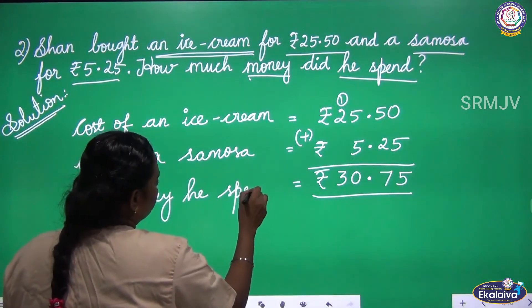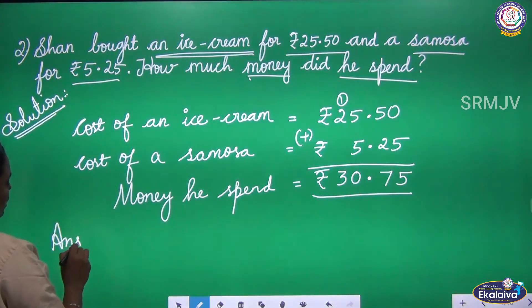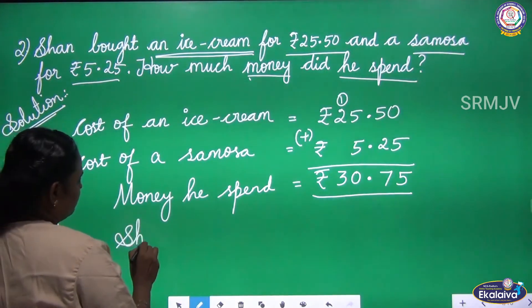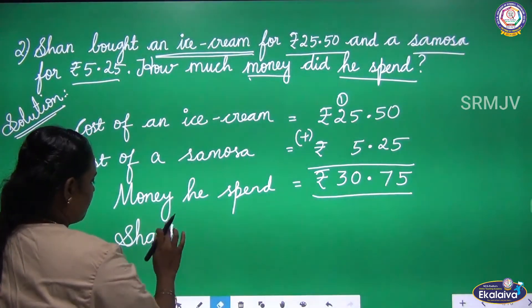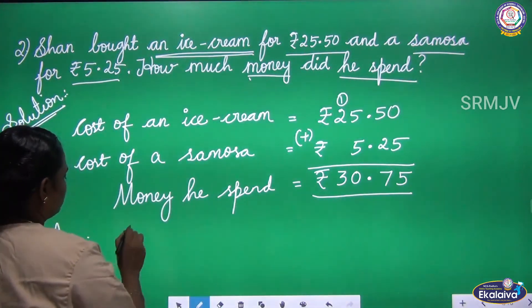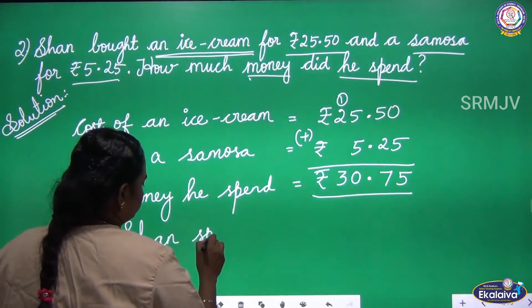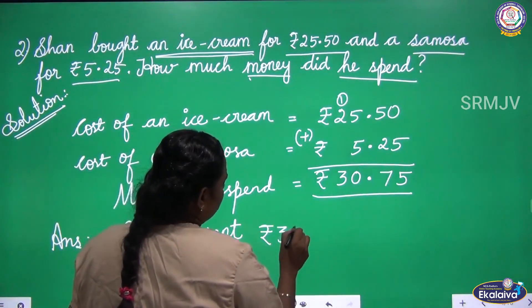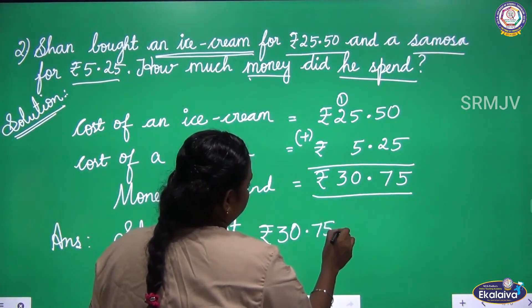Money he spent equals 30 Rupees 75 Paise. So Sean spent Rupees 30, 75 Paise.